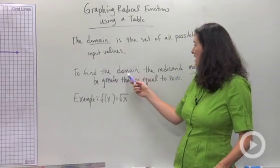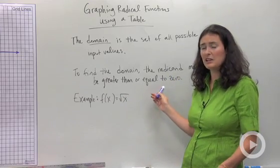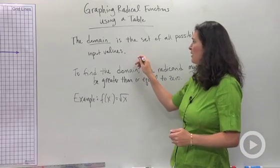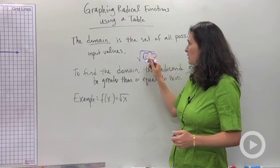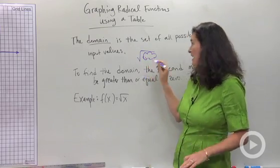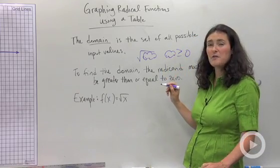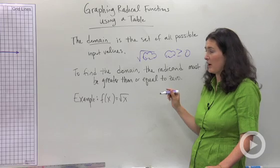So in order to find the domain, the radicand must be greater than or equal to zero. Let me show you what I'm talking about. If I want to take the square root of something, this thing, whatever it is, I'm drawing a little cloud, that cloud or the radicand has to be greater than or equal to zero. That's how you find the domain of a radical function.